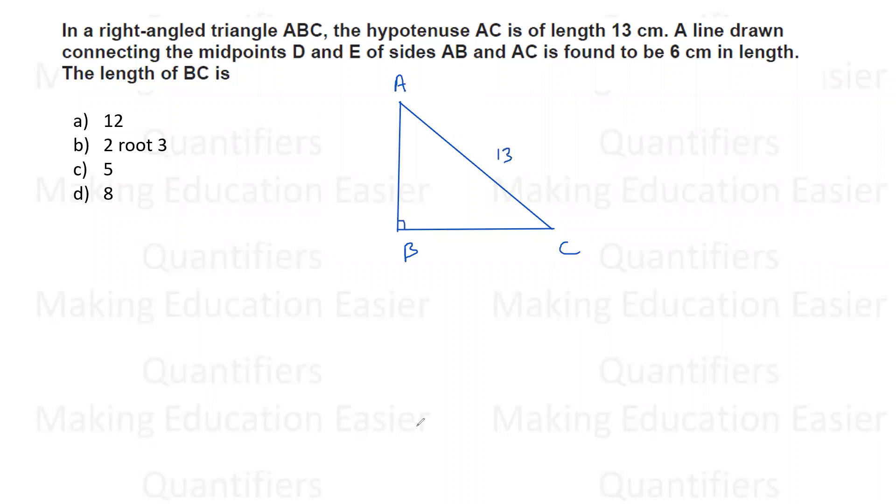The question says a line drawn connecting the midpoints D and E of sides AB and AC. That means D is the midpoint of AB and E is the midpoint of AC. And this length is given to us as 6. We have to find the length of BC.